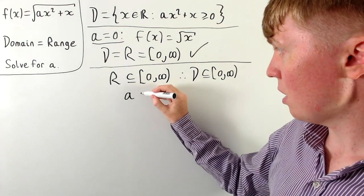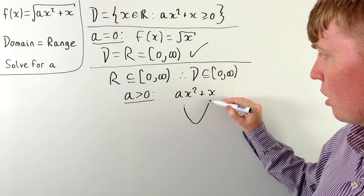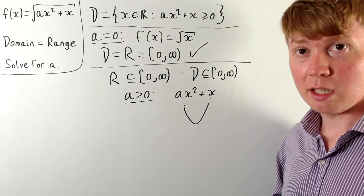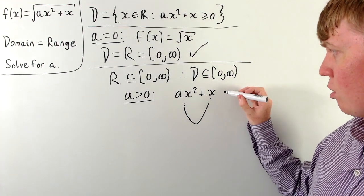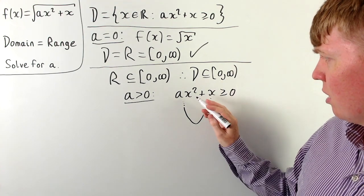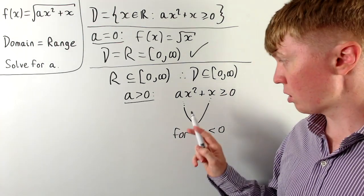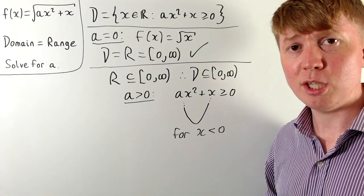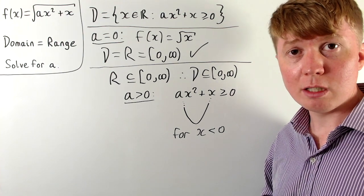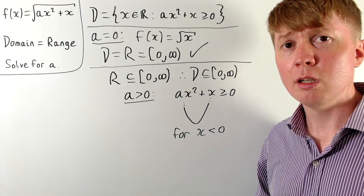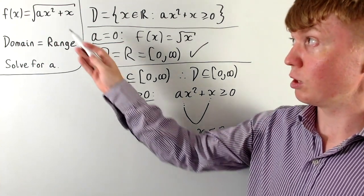If a is positive, the graph of ax² + x looks like a classic u-shape quadratic. Going to the left, because it goes up to infinity on the left-hand side, there will always be some negative values of x where ax² + x is greater than or equal to zero. So there will always be negative x values in the domain — but that's a problem because the range can't contain negative values. We can rule out a greater than zero.